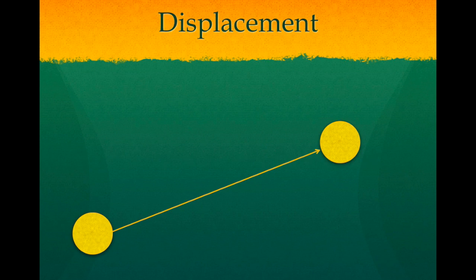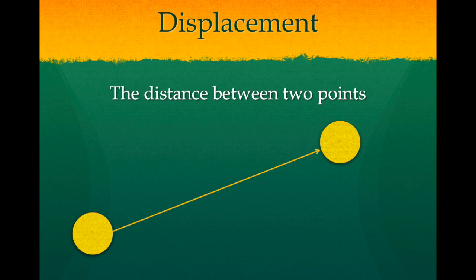For example, displacement is a vector quantity used to explore the distance between two points. It tells us not only how far away the points are, but also the direction from one point to the other.